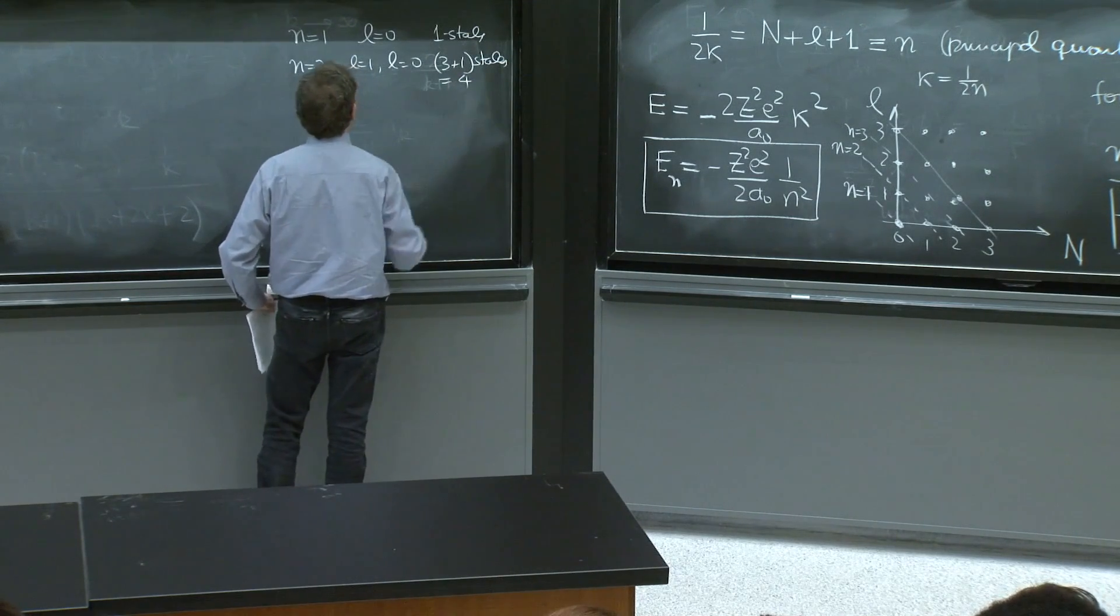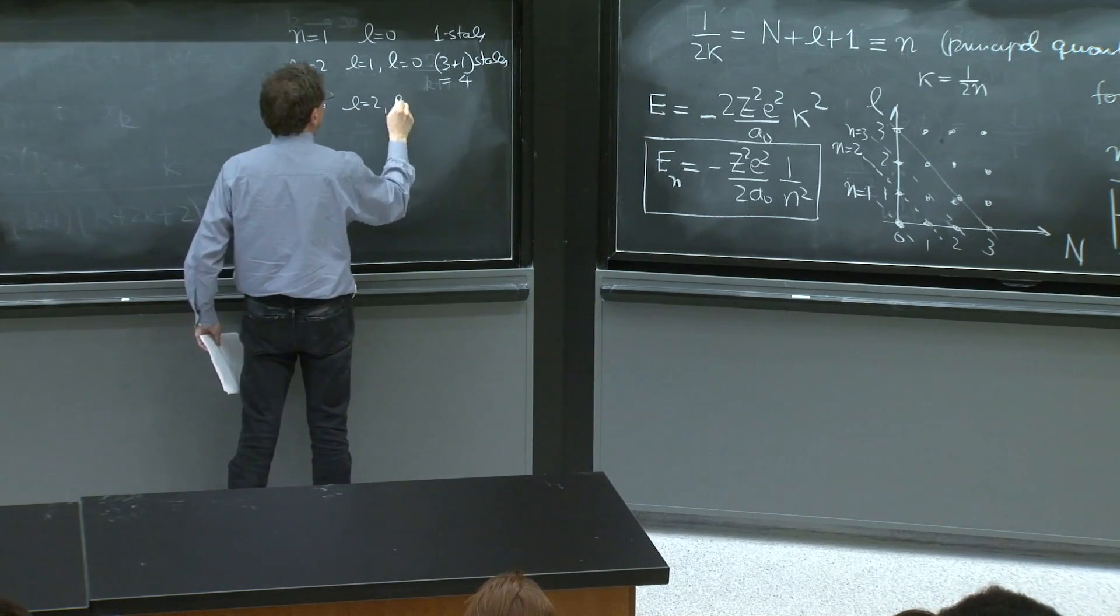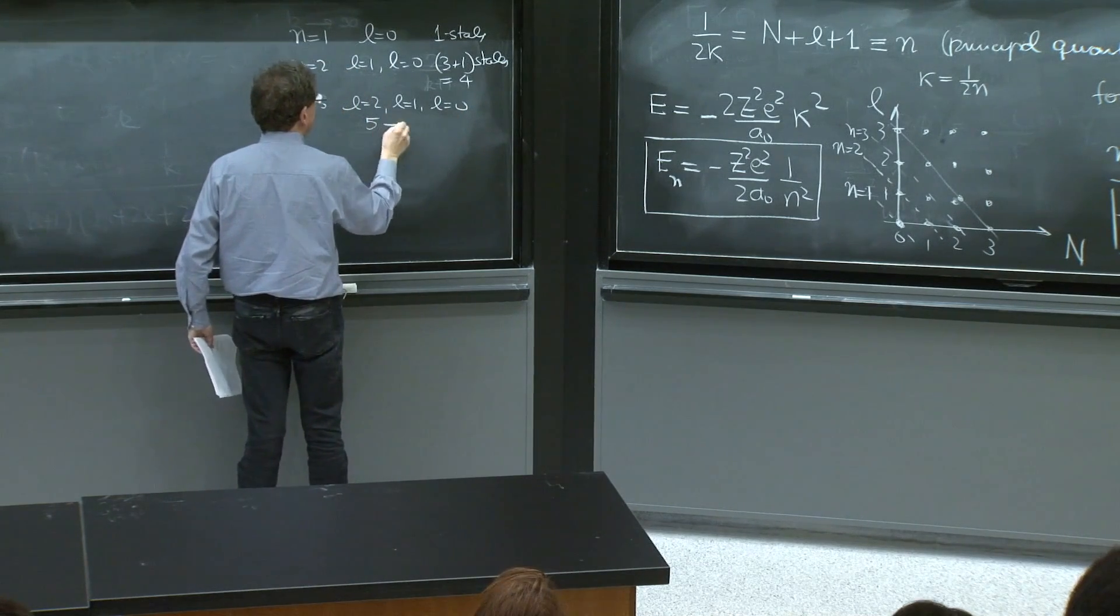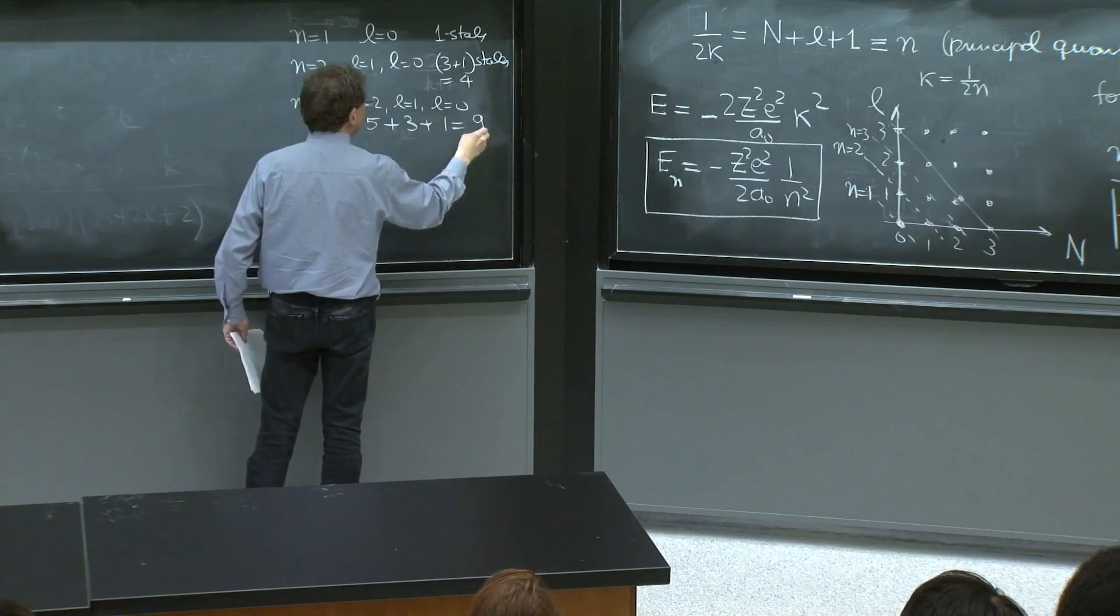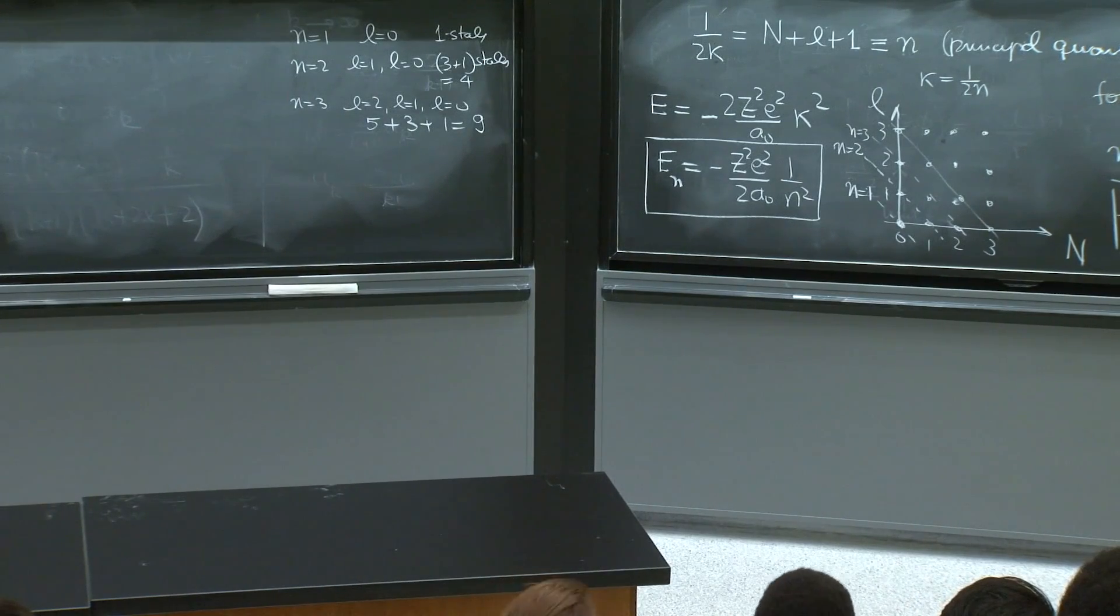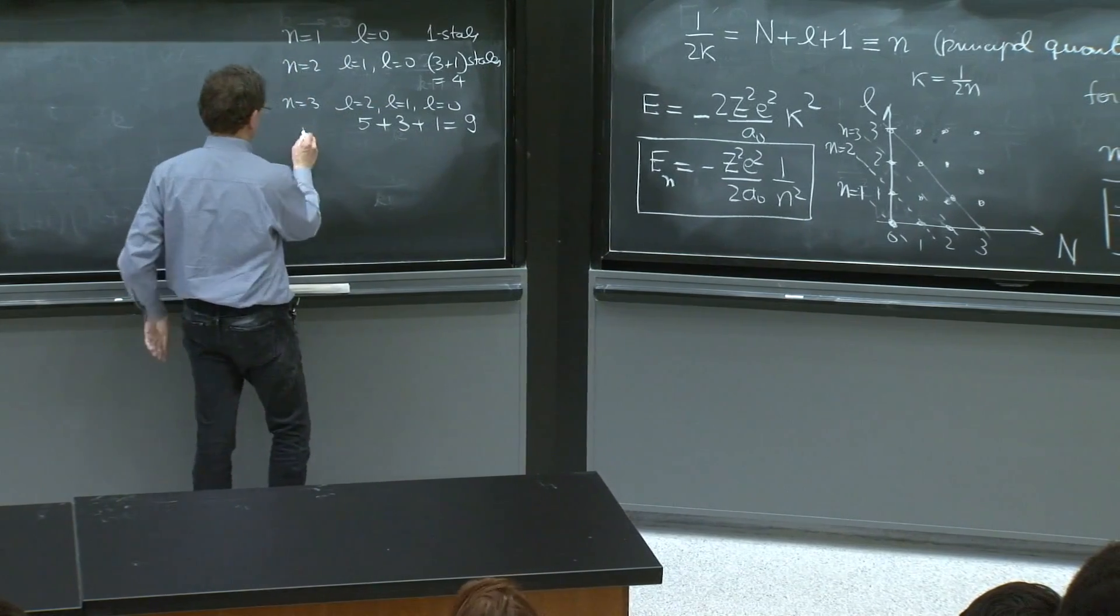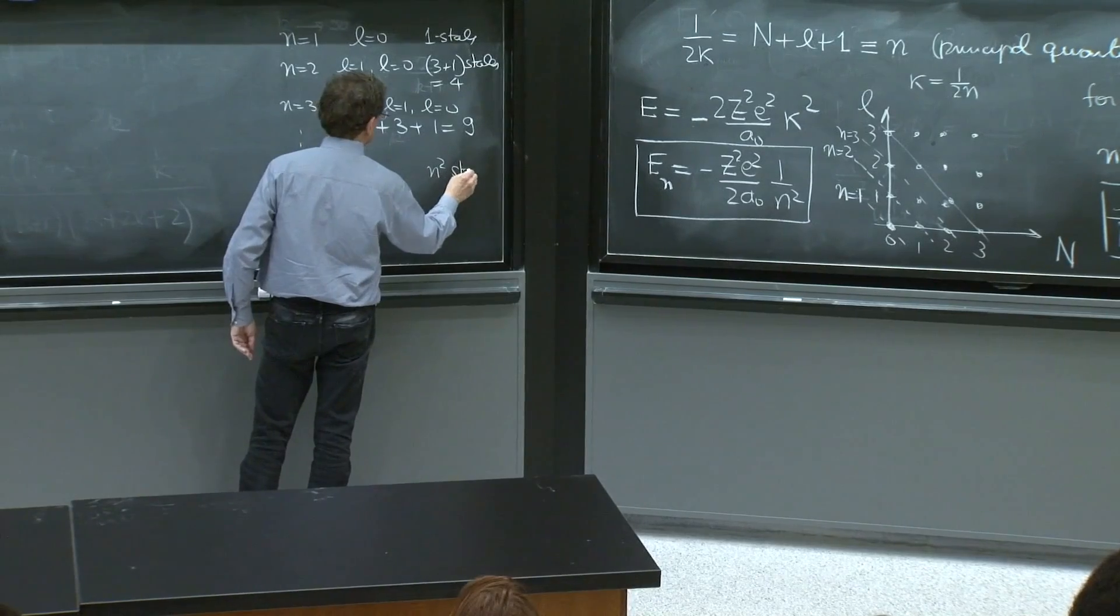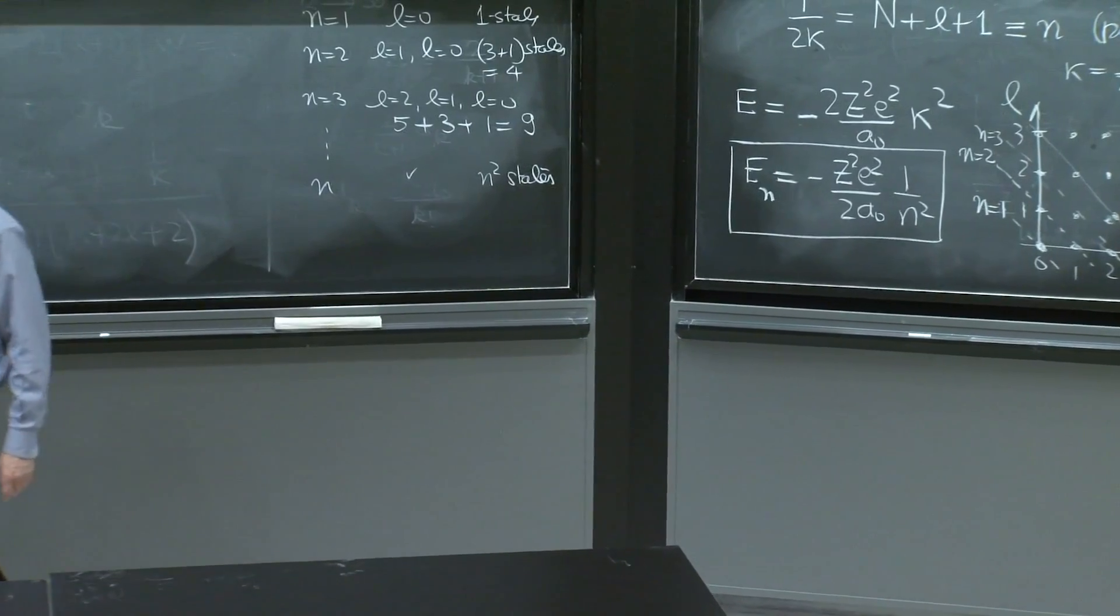n equals 3 will have l equals 2, l equals 1, and l equals 0, which is five states plus three states plus one state, which is nine states. And that's 3 squared. And 4 was actually 2 squared. And if you go on to n, you will have n squared states, something that perhaps you could try to count and show that that's true.